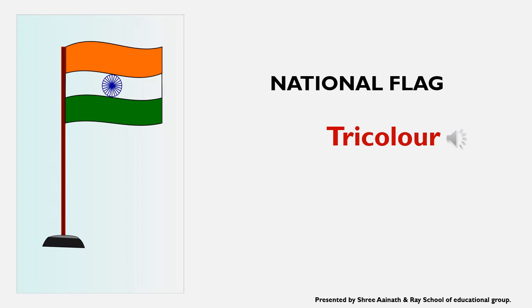In the white color in the middle, there is a chakra — the Ashoka Chakra. Inside it, the lines — the spokes — number 24. There are 24 spokes. So this is the national flag of our India, the Tricolor.